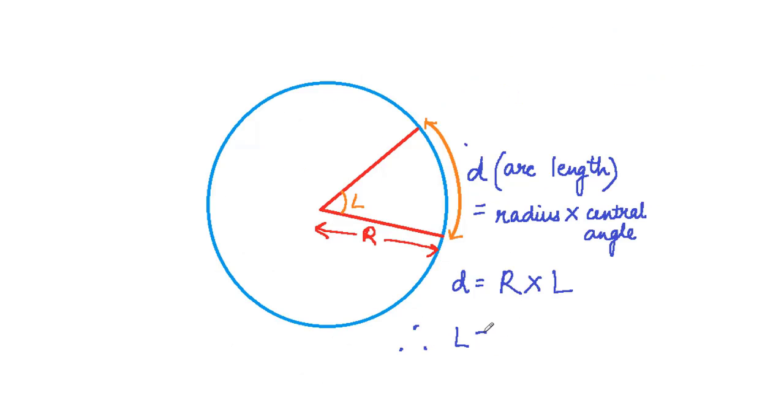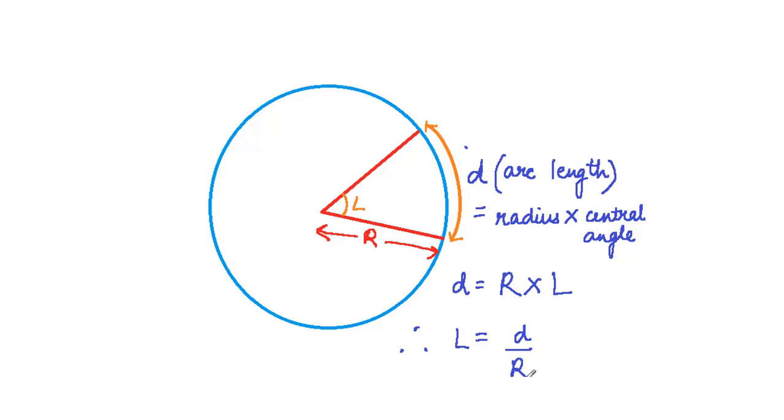We also need to recount the basic definition of an angle in radians. In a circle, the angle in radians that an arc makes with the center is defined as arc length divided by the radius of the circle.